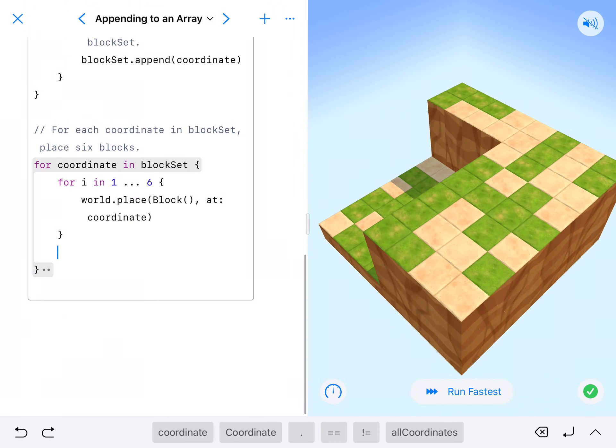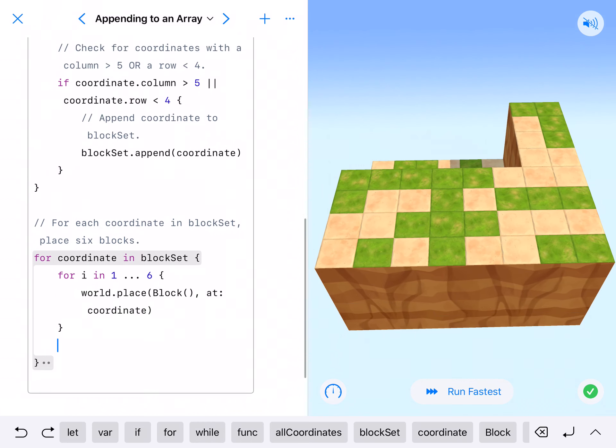Now we could do something else. We could say, and a gem, six blocks and a gem. We could say world dot place gem and it would place six blocks and a gem on top. That's or if we switch or, and that gets you the check mark.